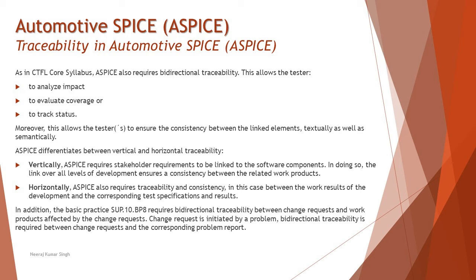ASPICE differentiates between vertical and horizontal traceability. Vertically, ASPICE requires stakeholder requirements to be linked to software components, ensuring consistency between related work products across all levels of development. Horizontally, ASPICE also requires traceability and consistency between the work results of development and the corresponding test specifications and results. Both ways ensure everything is covered and measurable, keeping all artifacts up to date.